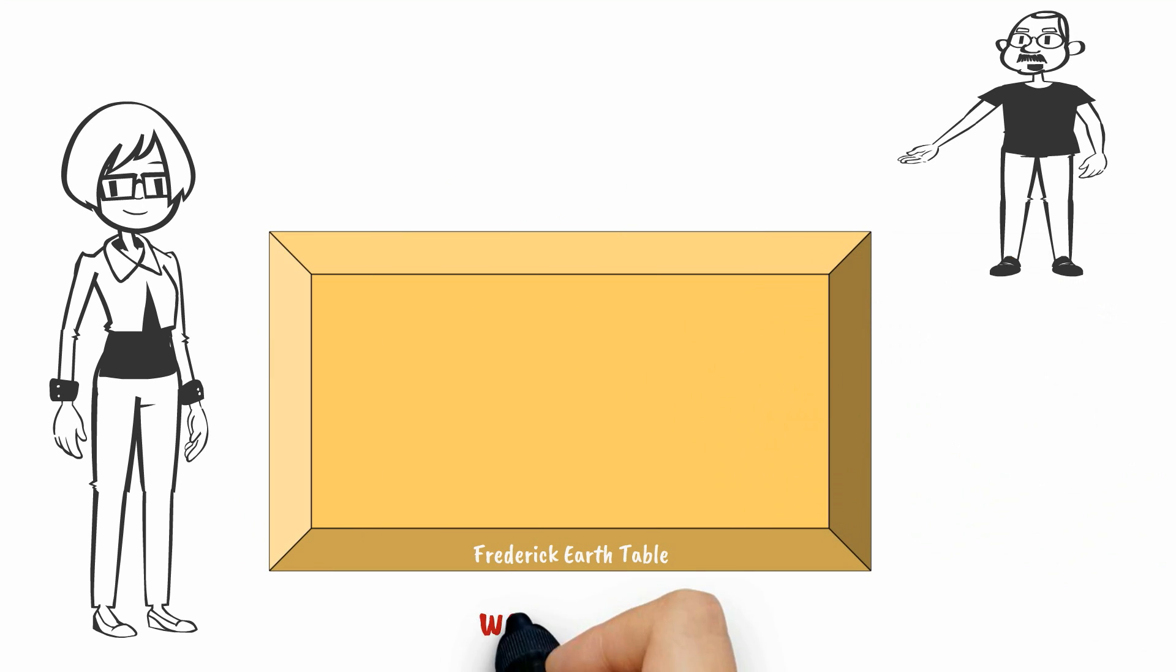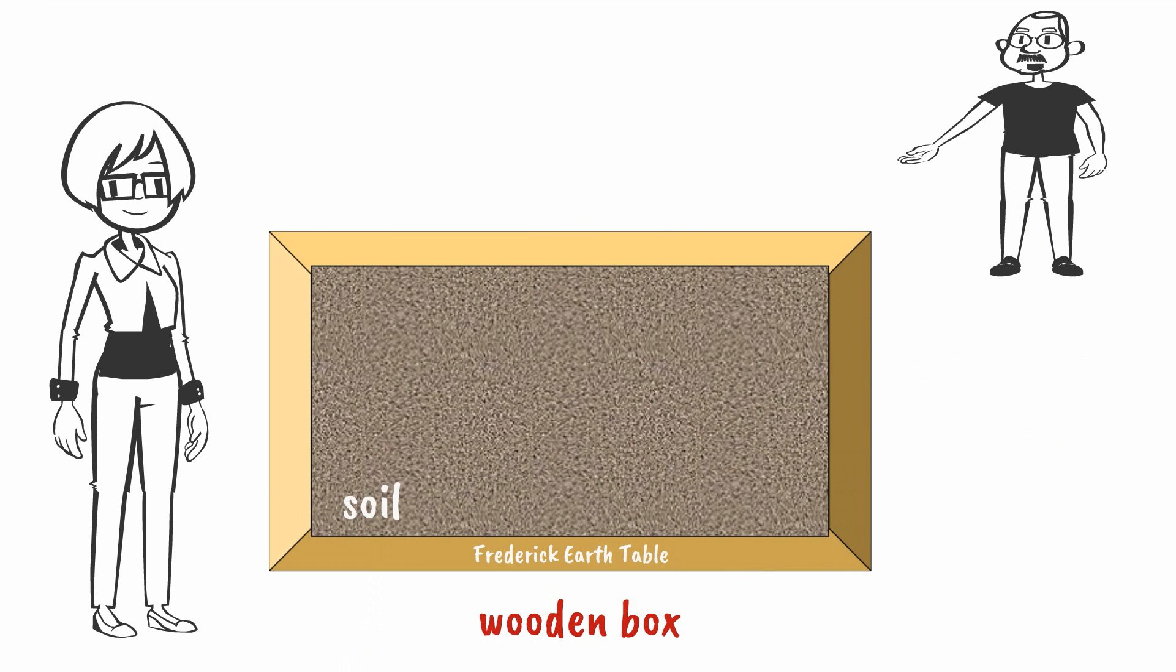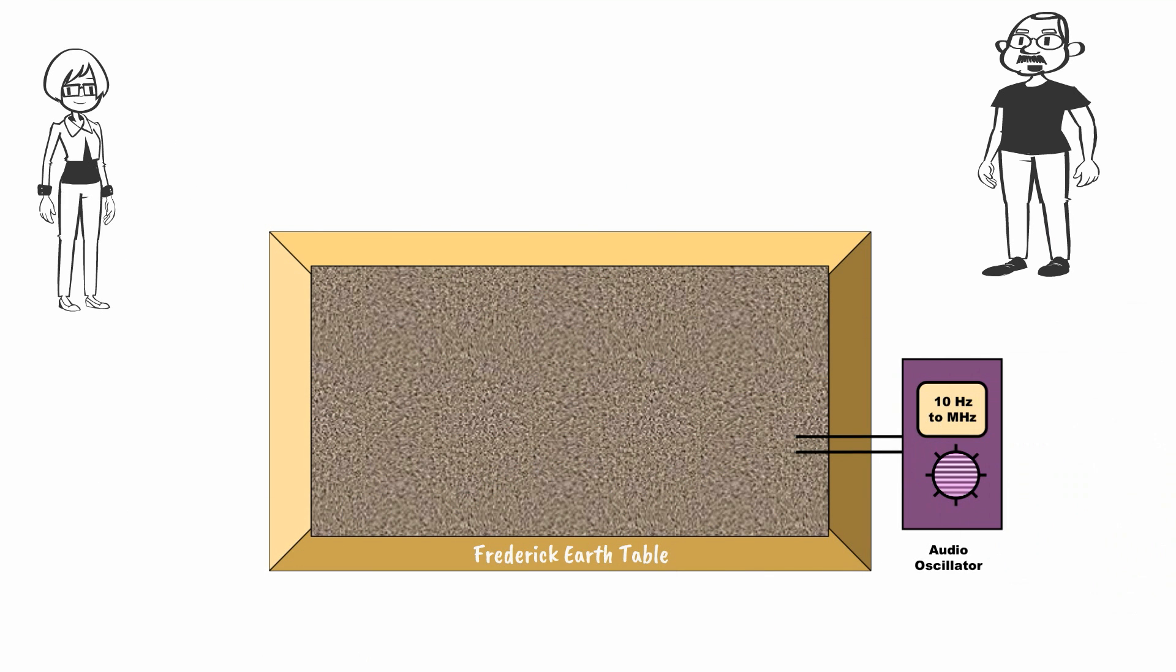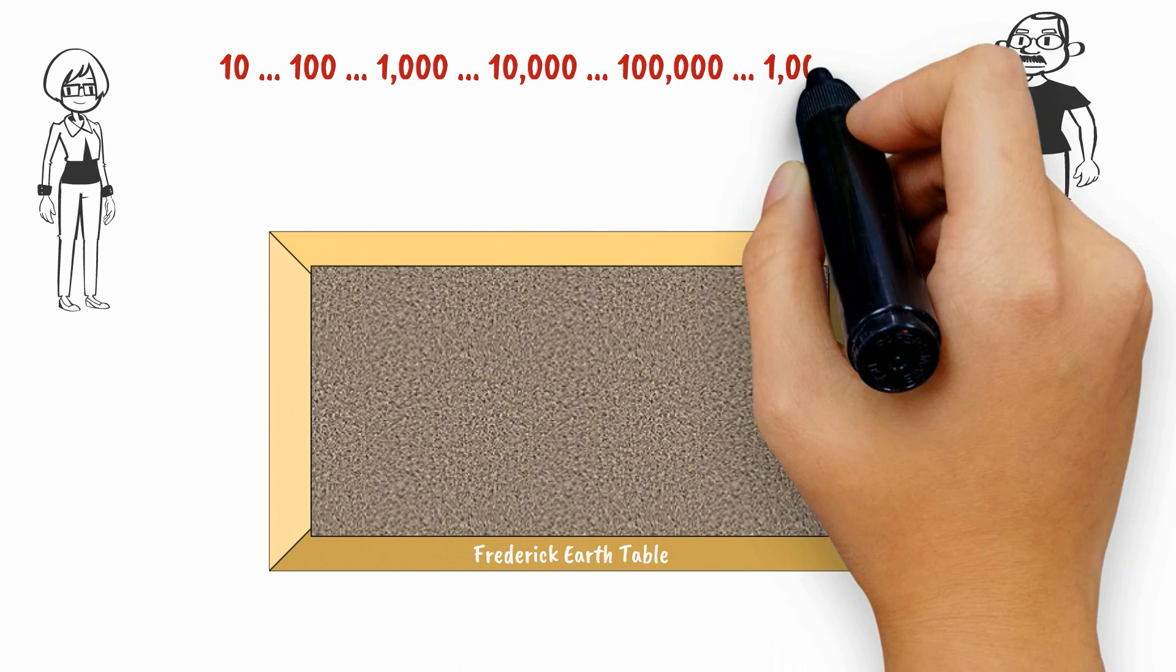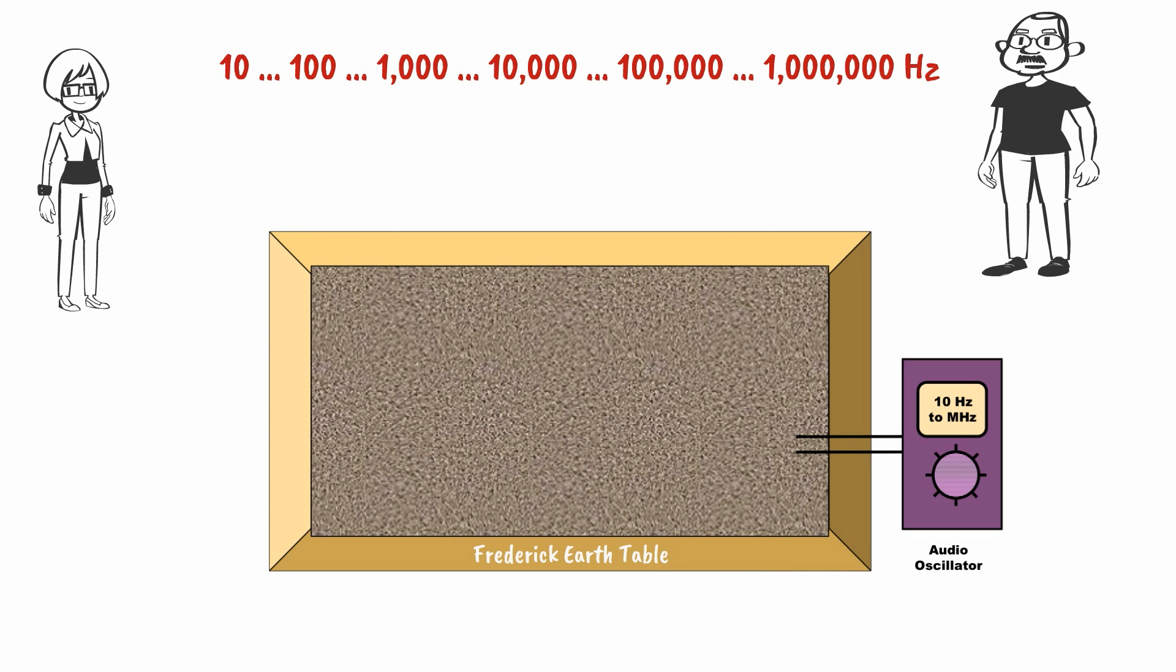I started with a wooden box to which I added potting soil, slightly moistened. I then added an audio oscillator and placed the two leads into the soil. This allows me to change the frequency from 10 to 1 million Hz. The audio oscillator produces one frequency, or tone, at a time.